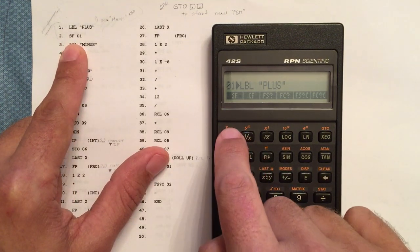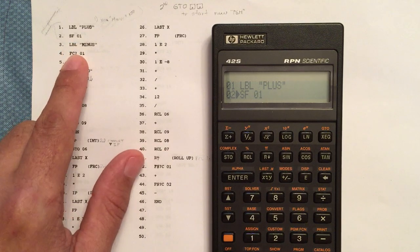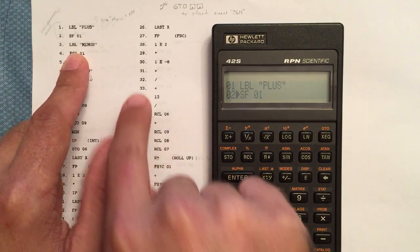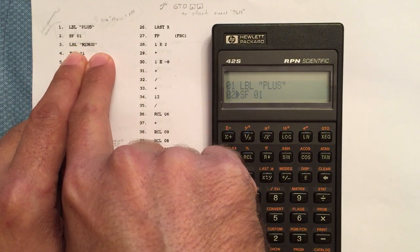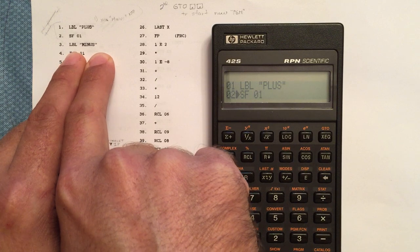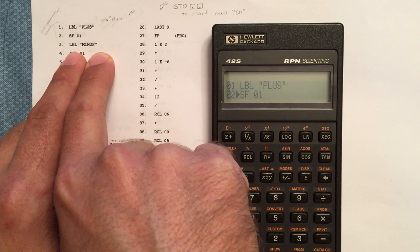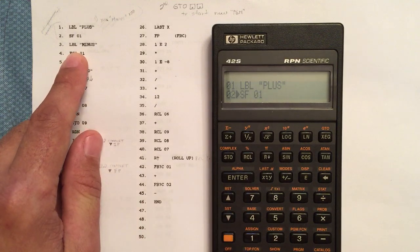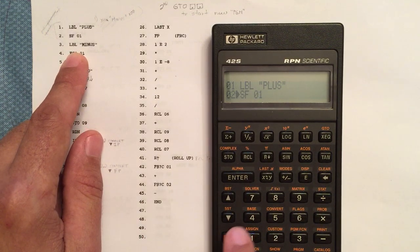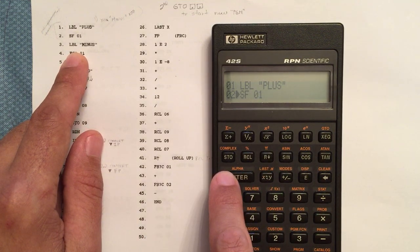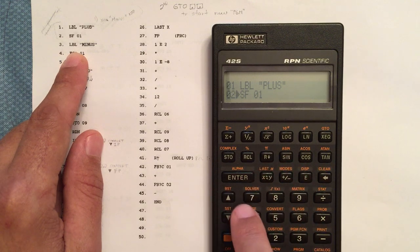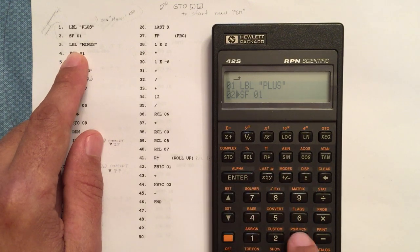Go to the flags, set flag 01. This is going to be a new global label within this program. So we're going to have a minus that can be called by other programs. So let's go to program function label.